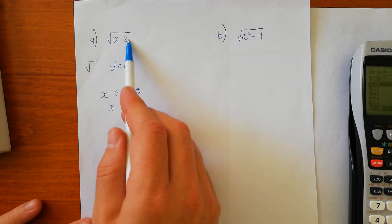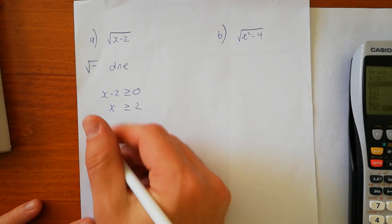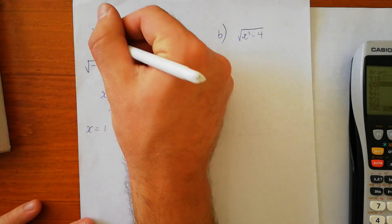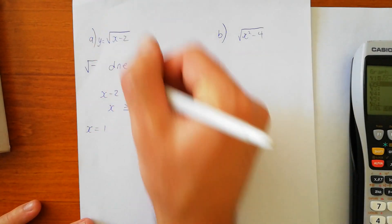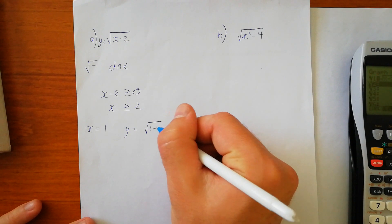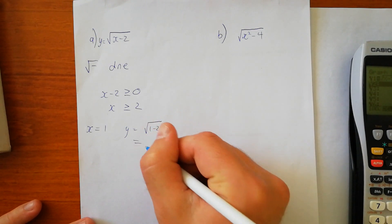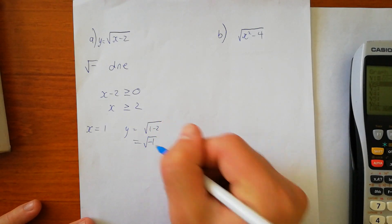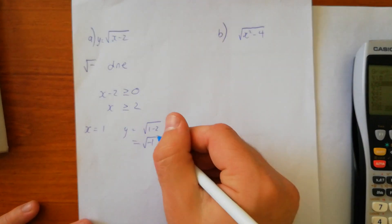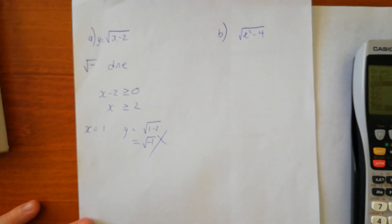If we were to put x equals 1 into this equation, we're going to get y equals the square root of 1 take 2, which is the square root of minus 1. This is undefined — there is no solution to this, so the function is undefined at that point.